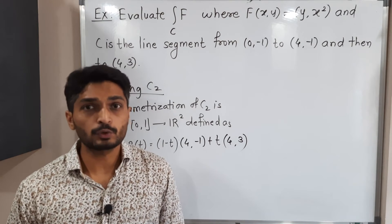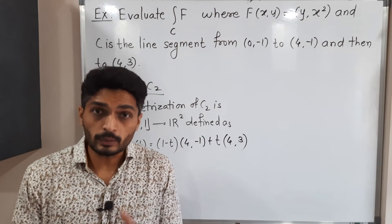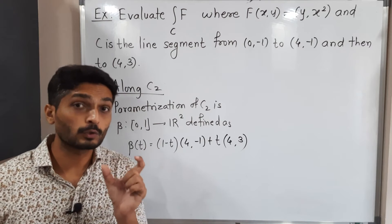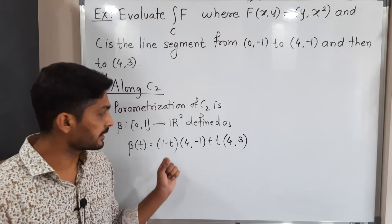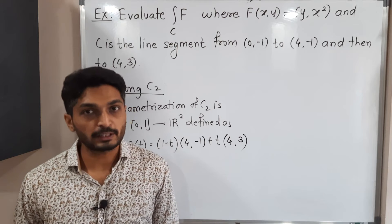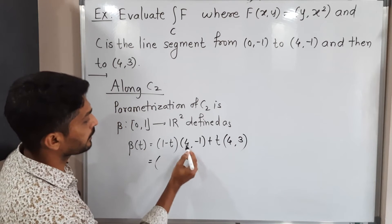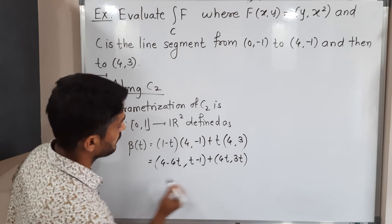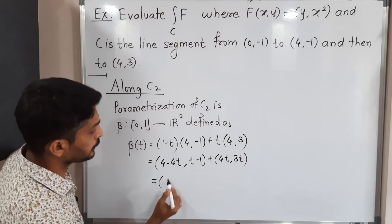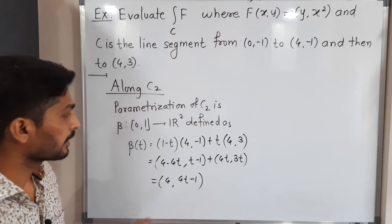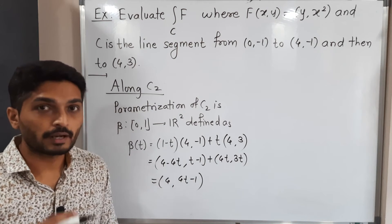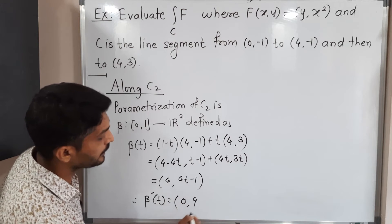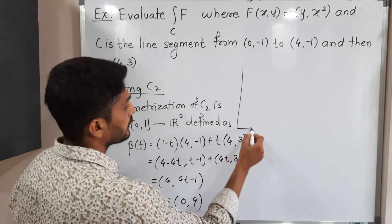Now we find the line integral of f along C2. C2 is a straight line joining (4, -1) and (4, 3). The parameterization beta is defined on the closed interval [0, 1] using the same technique: (1 - t) times the first point plus t times the second point. Simplifying: the x-component is 4 - 4t + 4t = 4, and the y-component is -(1 - t) + 3t = t - 1 + 3t = 4t - 1. So beta(t) = (4, 4t - 1). The derivative beta'(t) = (0, 4).